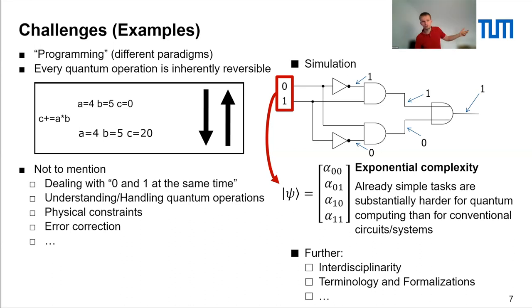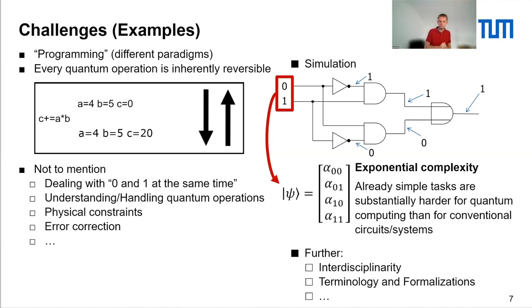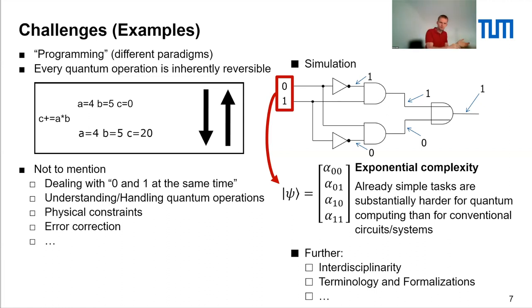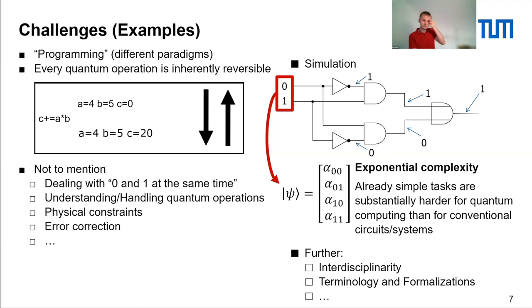Besides exponential complexity, quantum computing requires heavy interdisciplinary work, which is still a major roadblock. Sometimes it requires several meetings with physicists just to understand physical constraints correctly. Terminology and formalization are often not well-defined or differ between communities. In the conventional realm we have established models, programming languages, and a shared understanding, whereas in quantum computing these are still developing and changing rapidly. These are the challenges we face when developing design automation methods for quantum computing.